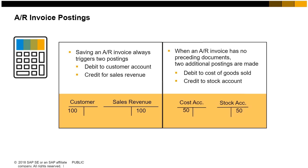When an inventory item is sold on an AR invoice that has no preceding documents, two additional postings are made. These are the postings for issuing the item from inventory that are usually handled by a delivery document: in a perpetual inventory system, a debit to the cost of goods sold account and a credit to the stock account. This graphic covers only the basic accounting transactions; there may be additional postings for tax or additional revenues and expenses.